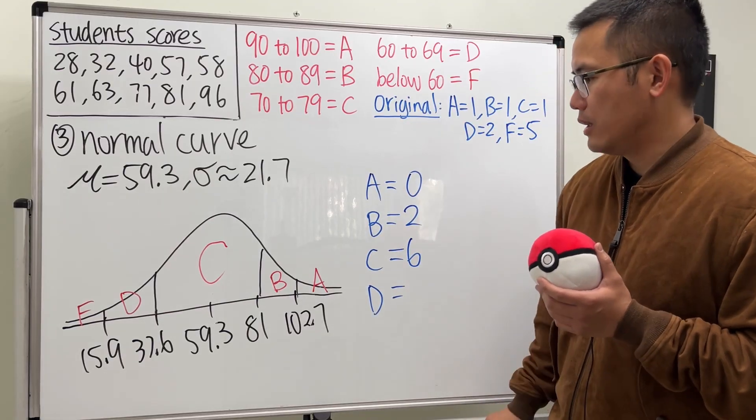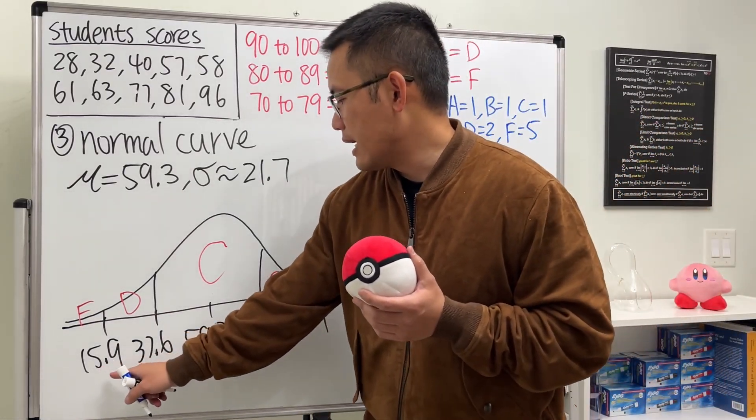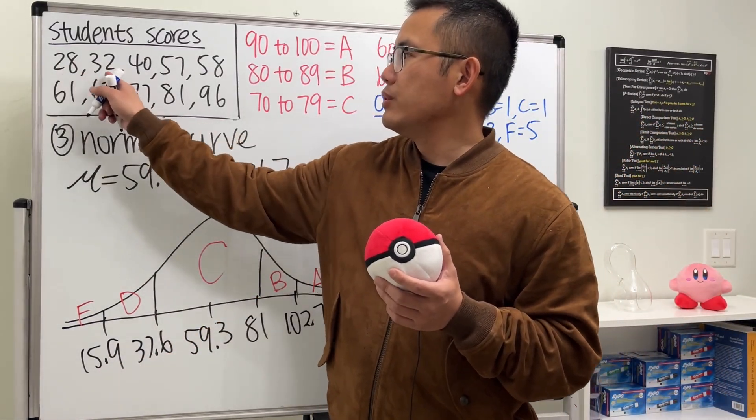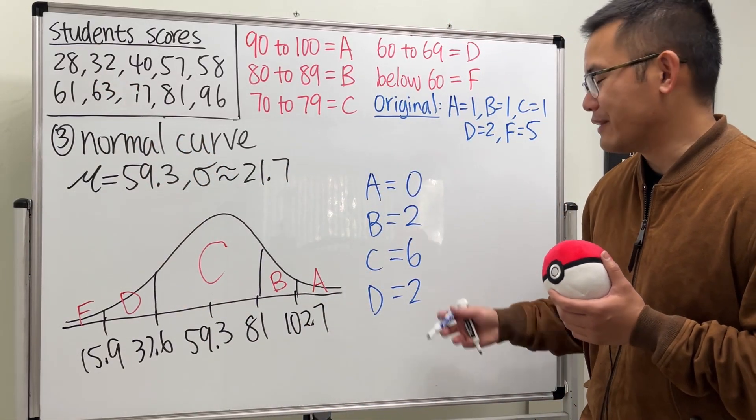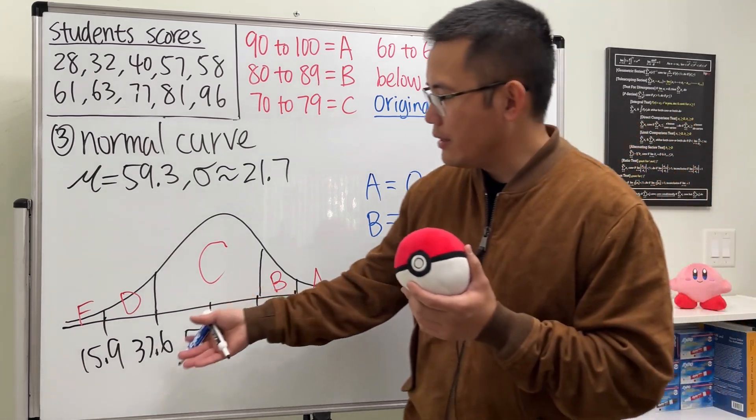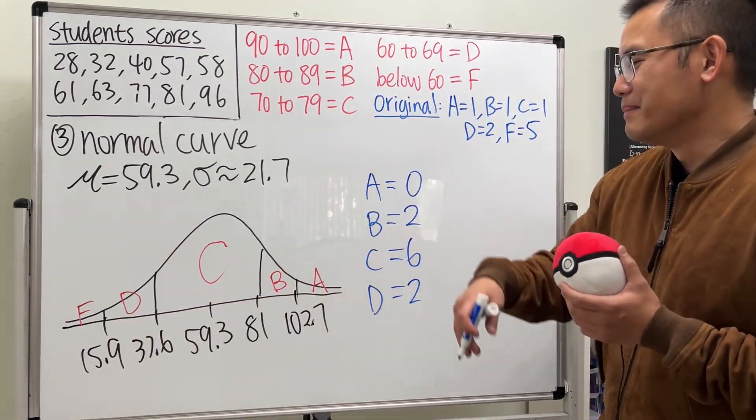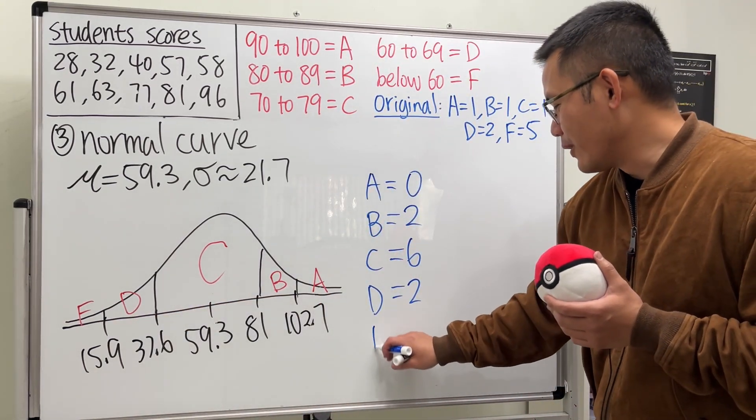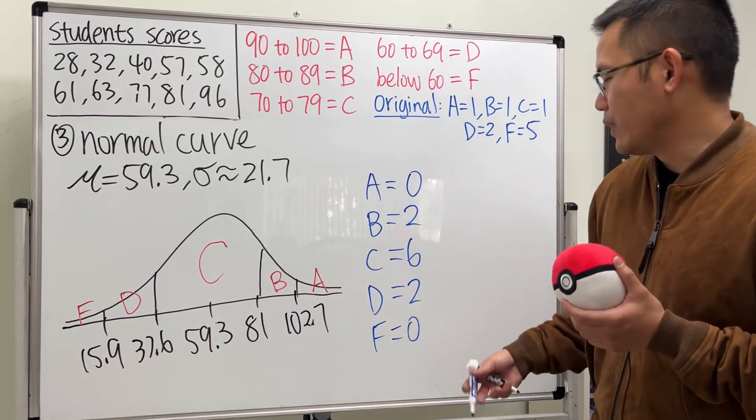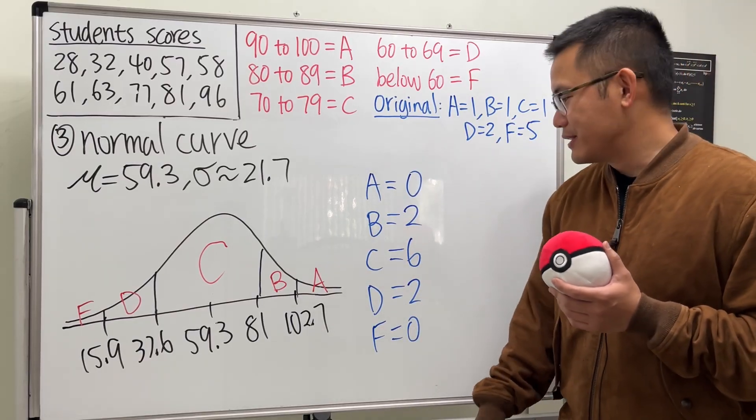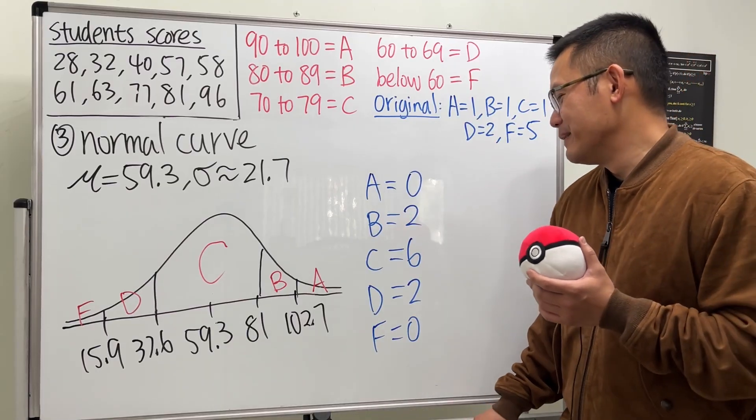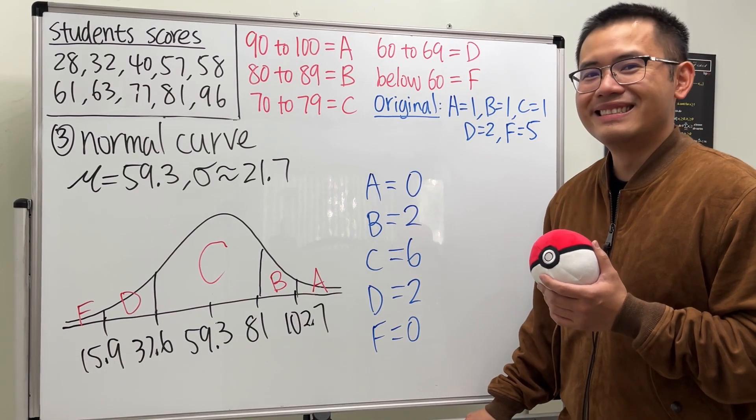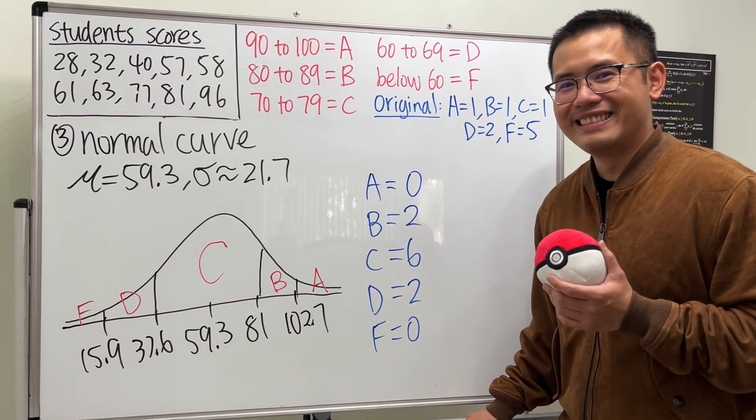How many Ds are we going to get? From 15.9 to this. These two people now, they don't have Fs anymore. They have Ds. And nobody got below 15.9. So we are not giving out any Fs. So this right here, I don't know how you guys feel, but yeah, that's the normal way to do it.